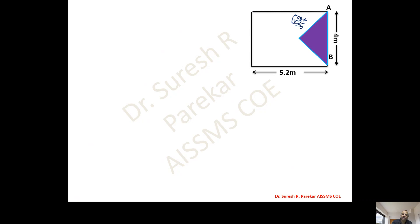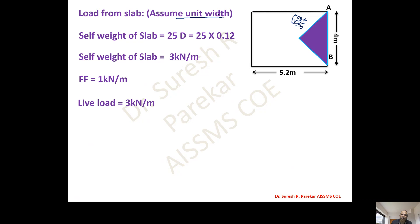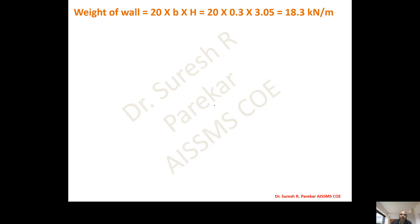Load on slab per unit width: self weight = 25 × 0.12 = 3 kN/m, floor finish = 1 kN/m, live load = 3 kN/m; total w = 7 kN/m. Load transferred from slab to beam = w·Lx / 3 = 7 × 4 / 3 = 28/3 = 9.33 kN/m.